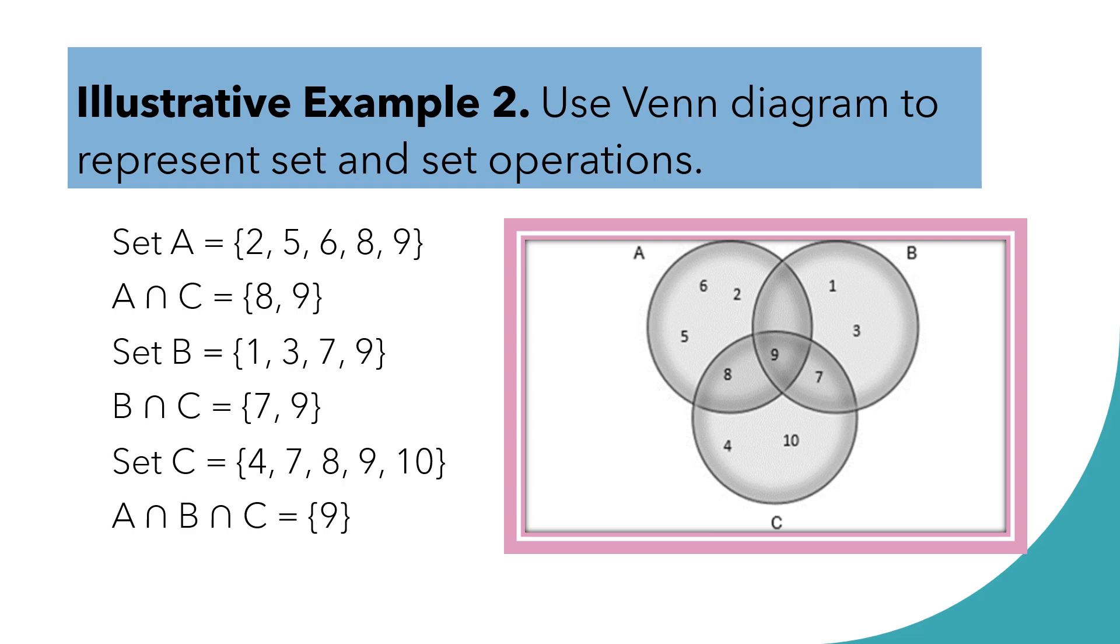And their common element is 7 and 9. And then, set C. Take a look on the circle C. Write all the elements under that set. We have 4, 7, 8, 9, and 10. Arrange from lowest to highest. And then, we are going to find their intersection. Intersection of all the three sets. So, that is 9, found in the middle part of the three circles.